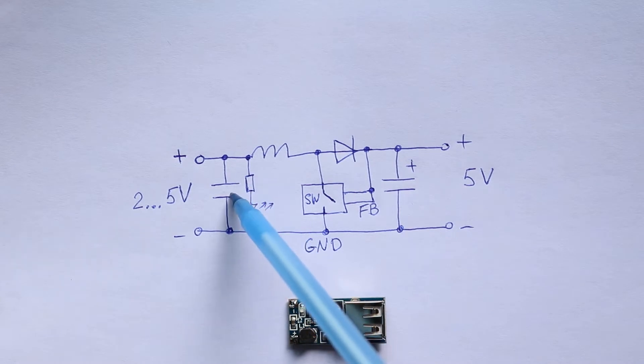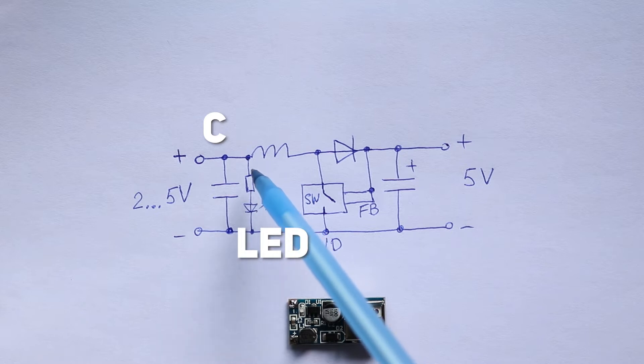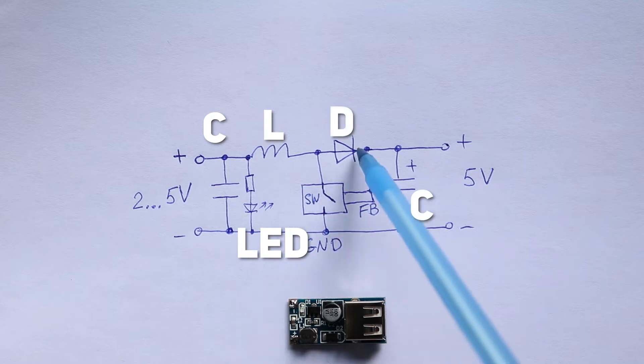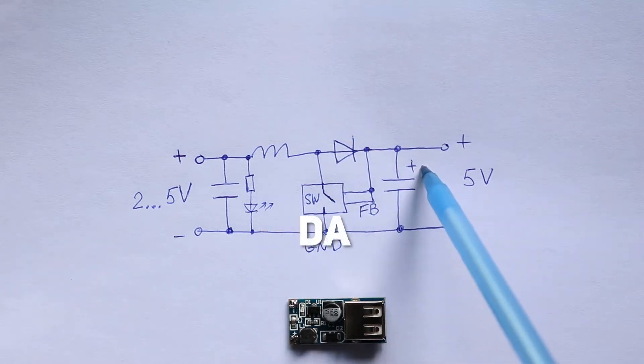It has an input ceramic capacitor, indication LED just to see whether something is connected to the input or not, inductor to store energy, output electrolytic capacitor, diode, and the main circuit. And obviously, the main circuit monitors output voltage using feedback pins.